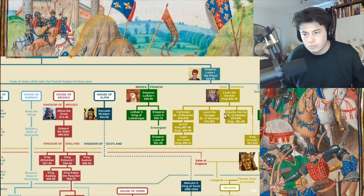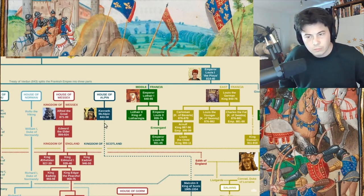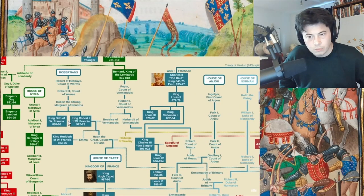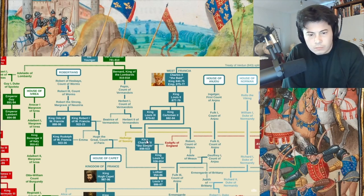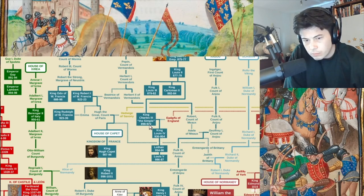When Carloman II died, his younger brother Charles was too young to take the throne, so Charles the Fat ended up becoming King of West Francia as well as Emperor over in East Francia. This would be the last time all of Francia was united under a single ruler. But by this point the nobility in Western Europe had grown very powerful — so powerful that they eventually had Charles the Fat deposed and decided to elect new kings instead.